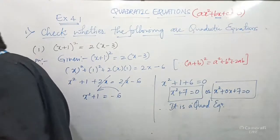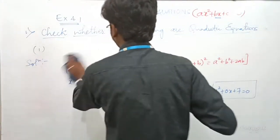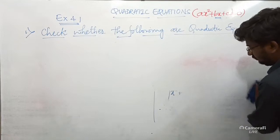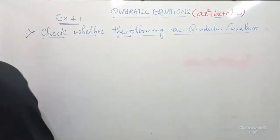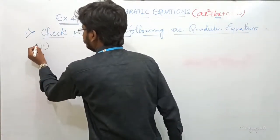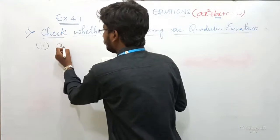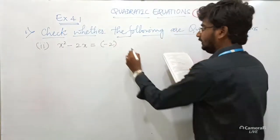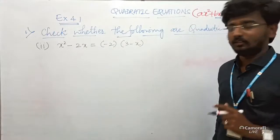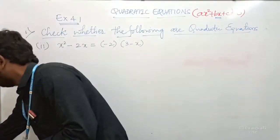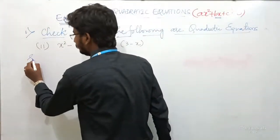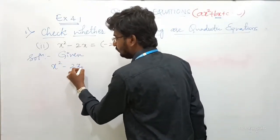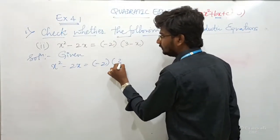Coming to problem number 2. The question is: X² − 2X = −2(3 − X). Given: X² − 2X = −2(3 − X).